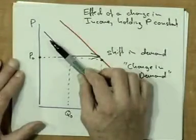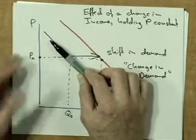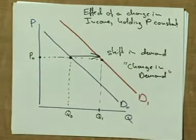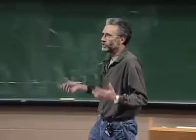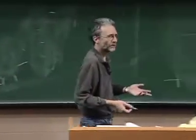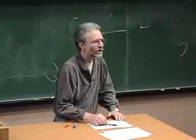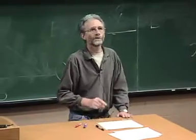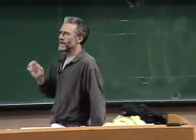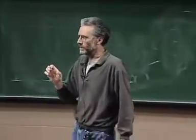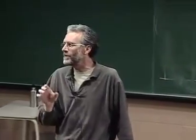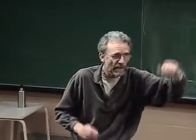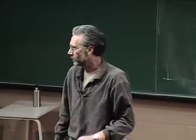Now we change income. Income's not on the axis. So the only way we can show the effect of a change in income on quantity demanded is to shift the whole curve. If the change in quantity demanded is caused by a change in the thing on the axis, which is price, it's a movement along the curve.